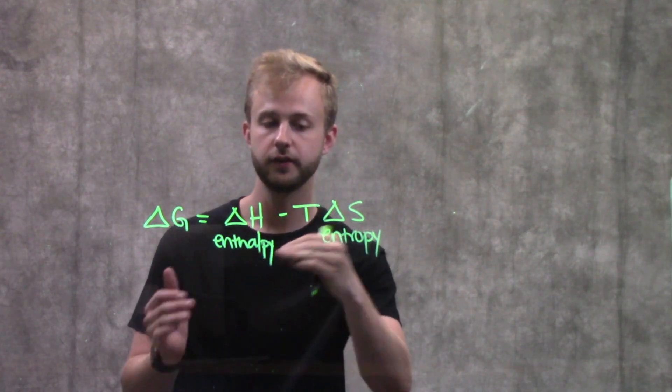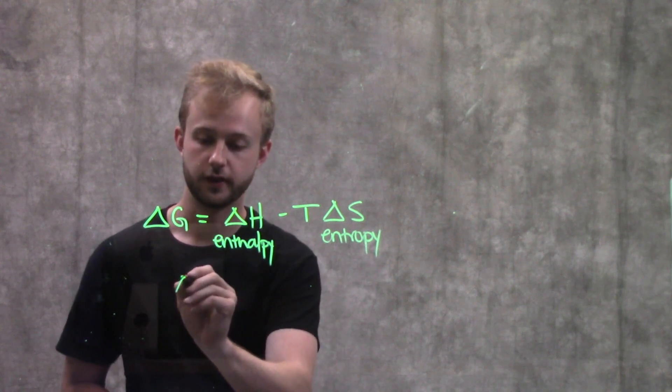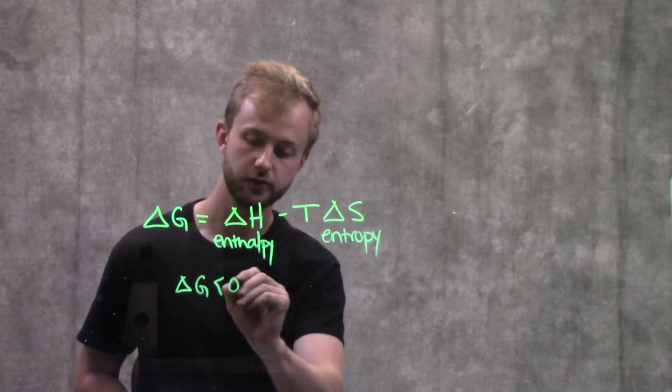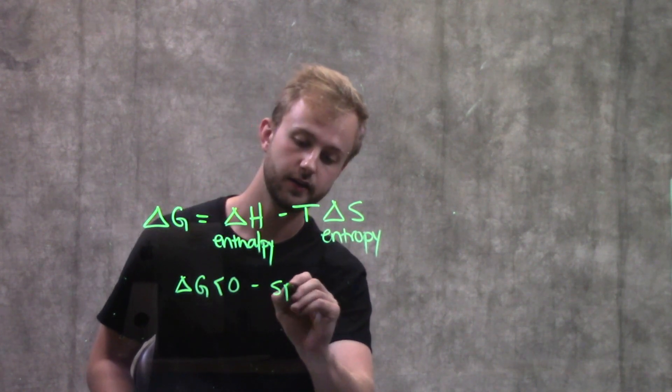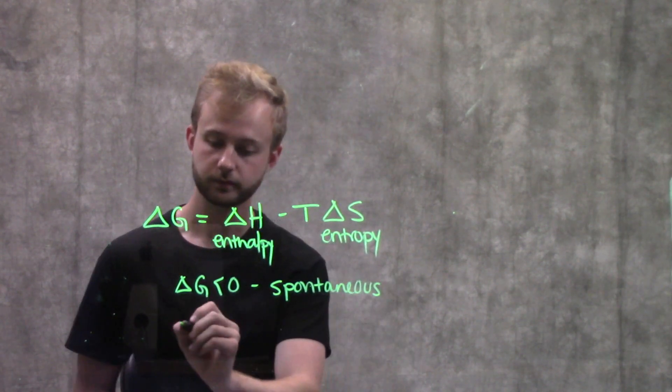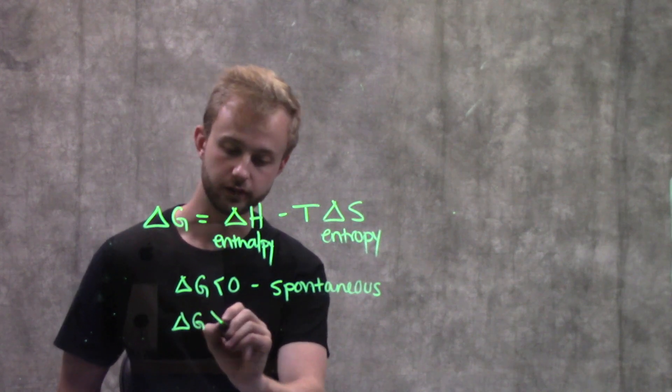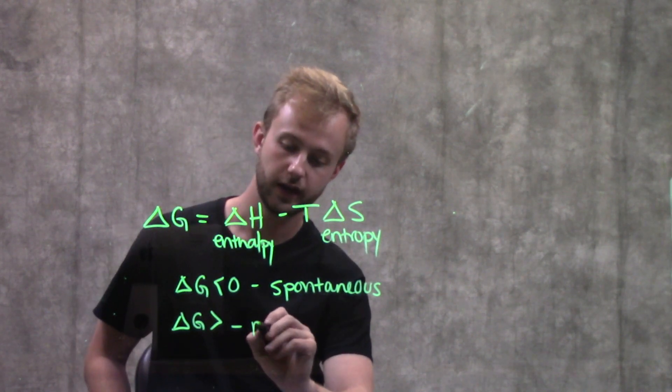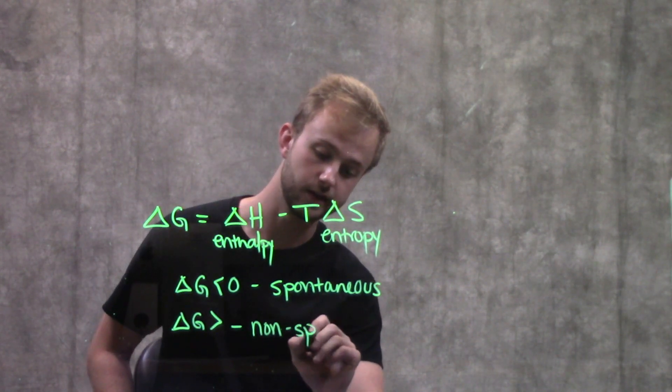So when we put all of these pieces in this equation, if delta G is less than zero, then we say that that reaction is spontaneous, meaning that it will take place on its own. However, if delta G is greater than zero, then that reaction is non-spontaneous.